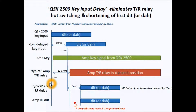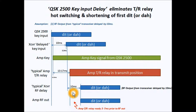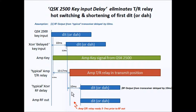Now we see that the amplifier is starting to switch into the transmit mode. It still takes 13 to 17 milliseconds as we showed previously, but it started at the time the input came into the QSK 2500 and not the time the signal arrived at the transceiver. So now we see that the transceiver produces the RF output 10 milliseconds from its input; however, this RF output is now after the amplifier TR relay has already settled.